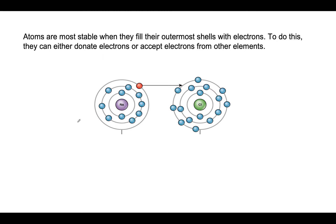Now we're going to move on to the concept of ions. Atoms are most stable when they fill their outermost shell with electrons. In general, in nature, the tendency is to go towards the most stable state, and the most stable state for an atom is one in which the outer electron shell is full.